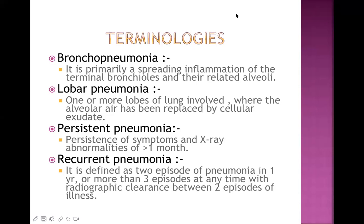Let's talk about some important terminology in pneumonia: bronchopneumonia, lobar pneumonia, persistent pneumonia, and recurrent pneumonia. Bronchopneumonia is a primarily spreading inflammation of the terminal bronchioles and their related areas — it is a patchy type of inflammation, here and there, not uniform in one area. Lobar pneumonia is when one or more lobes of the lung are involved.